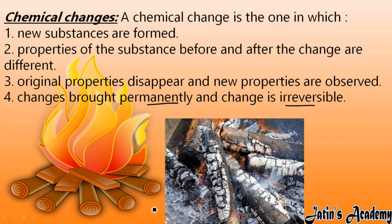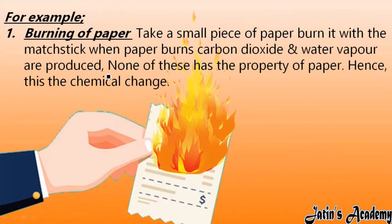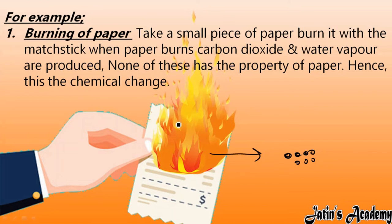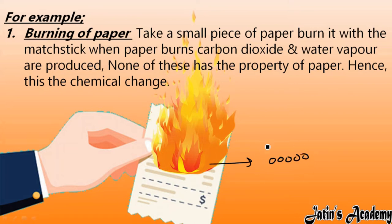We cannot reverse it back to the original wood. Next we are having examples related to chemical change. The first example is burning of paper. Take a small piece of paper and burn it with a matchstick. You will observe this paper converts into ash after burning. During burning, it also produces carbon dioxide in the form of smoke, and water vapors are produced. These properties are entirely different from the original paper, so the ash property is entirely different from the original paper's property.